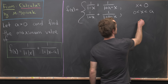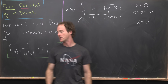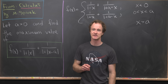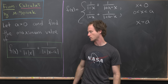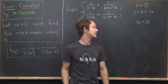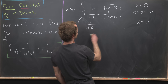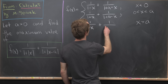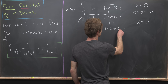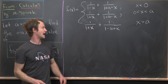Finally, if x is bigger than a, we know the argument of each absolute value function is positive, so we can just erase the absolute values. That gives us 1/(1 + x) + 1/(1 − a + x), rearranging the a and x in the second term.